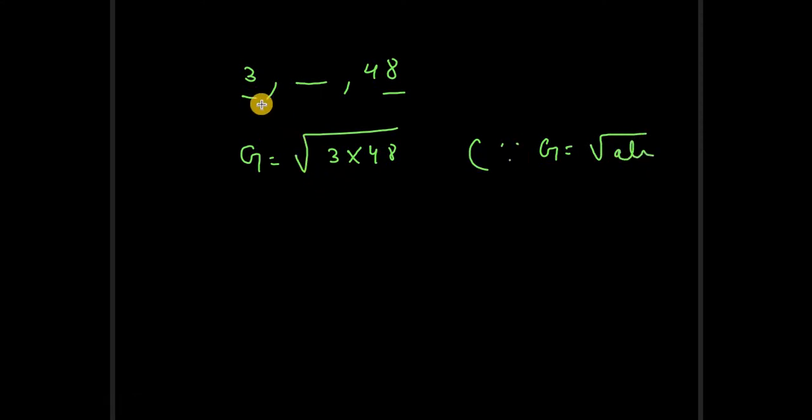So just multiply these two. What we'll get is 3 into 48. Let's divide it. I think we can write it as 8 times 6.